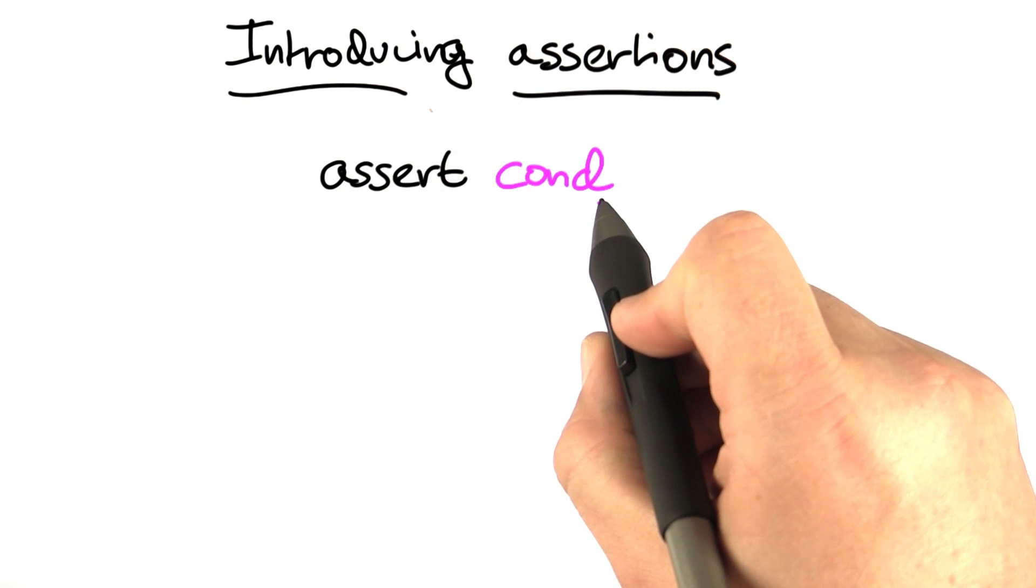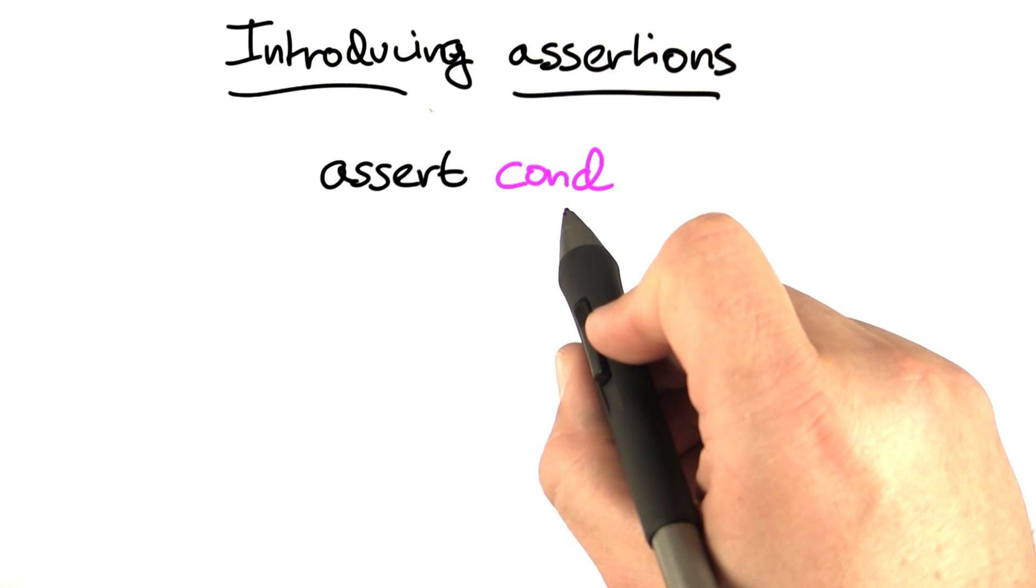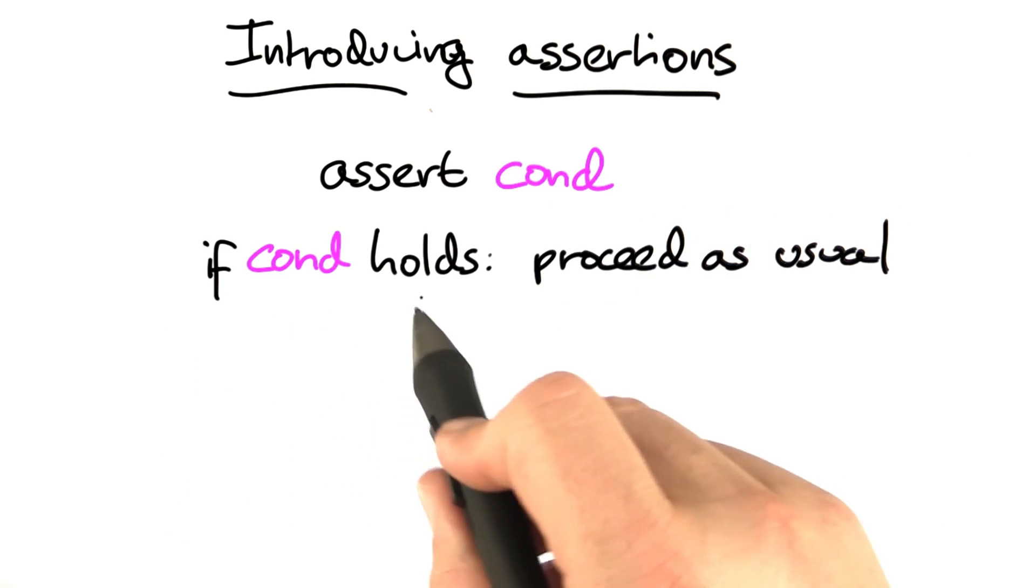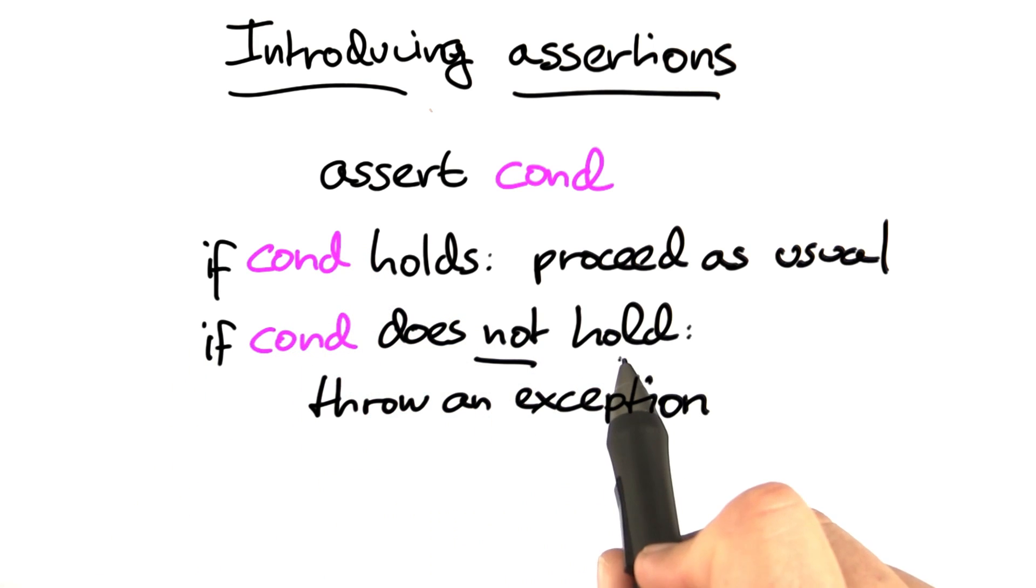Generally speaking, the statement assert condition evaluates the condition, and then its behavior depends on whether the condition evaluates to true or to false. If the condition holds, we proceed as usual. If the condition does not hold, however, then we interrupt program execution by throwing an exception.